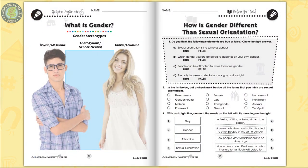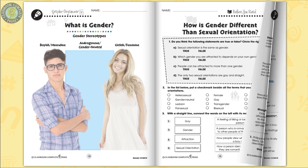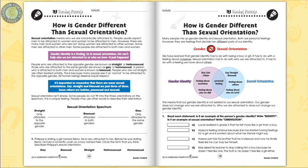Every chapter has a before-you-read section to see what learners already know about the topic, ideal for differentiated learning. Students will become familiar with the different forms of gender that one can identify as, and how it differs from sexual orientation.